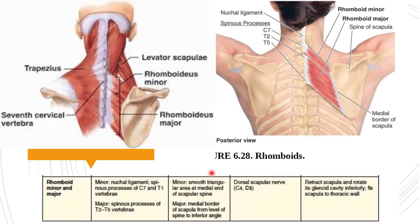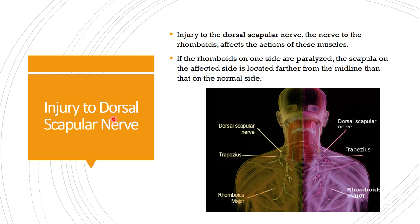The rhomboids retract the scapula, rotate its glenoid cavity inferiorly, and fix the scapula to the thoracic wall. If the rhomboids on one side are paralyzed due to dorsal scapular nerve injury, the scapula on the affected side is located farther from the midline than on the normal side. The dorsal scapular nerve supplies both levator scapulae and the rhomboids.